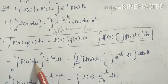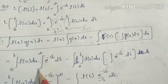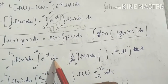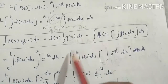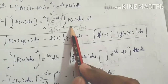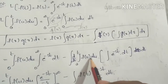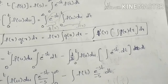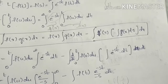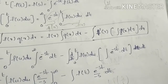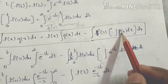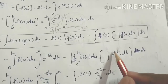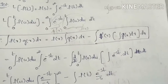Applying integration by parts: the first function is the integral from 0 to t of f(u) du, and the second function is e^(-st). The integral of e^(-st) dt gives e^(-st) / (-s). We take the derivative of the integral from 0 to t of f(u) du with respect to t, which gives f(t).